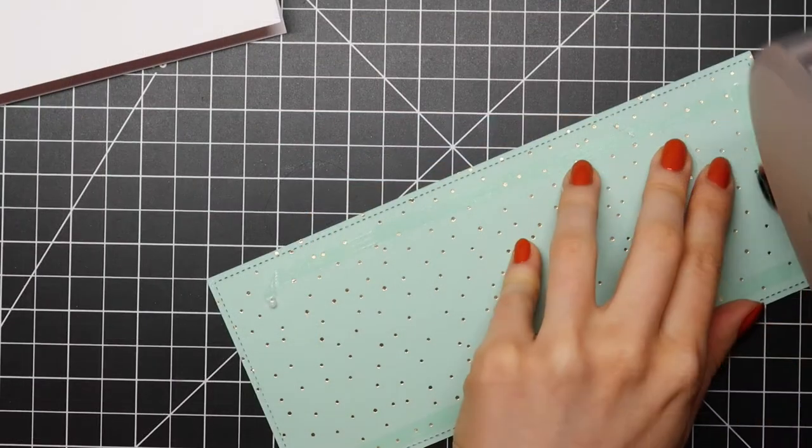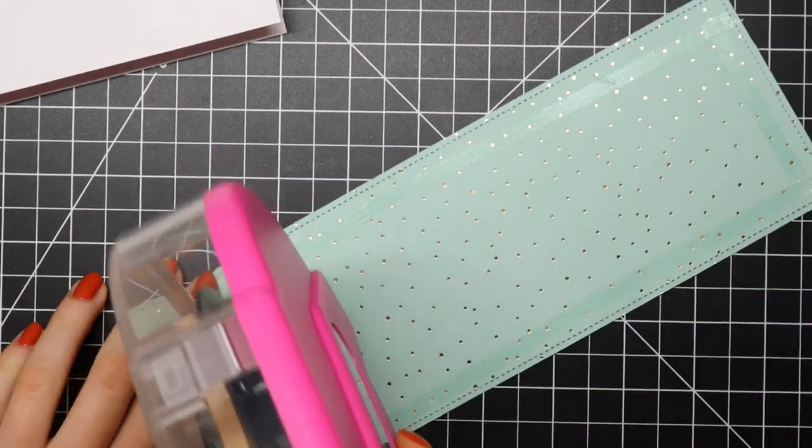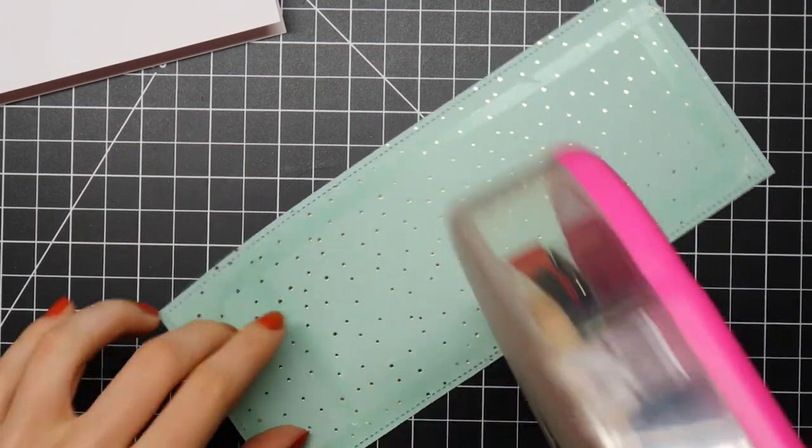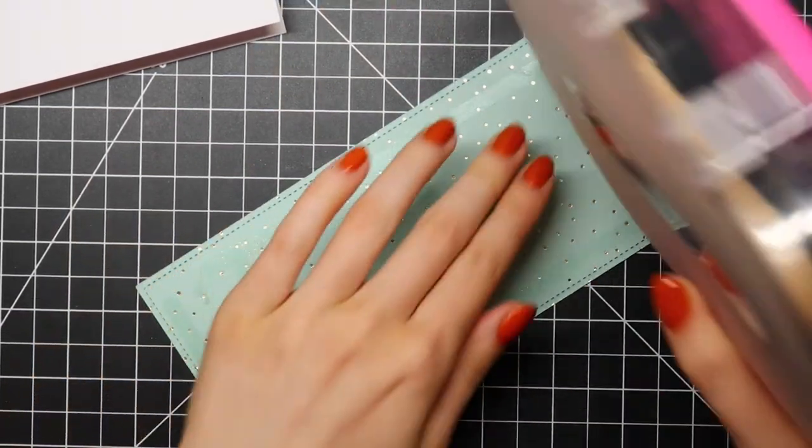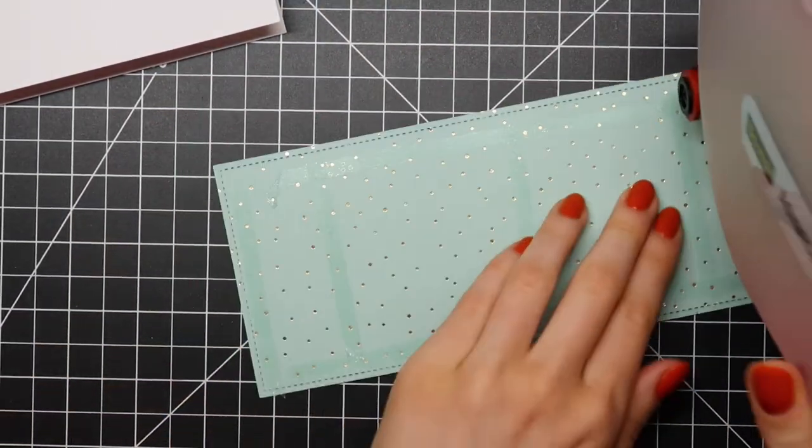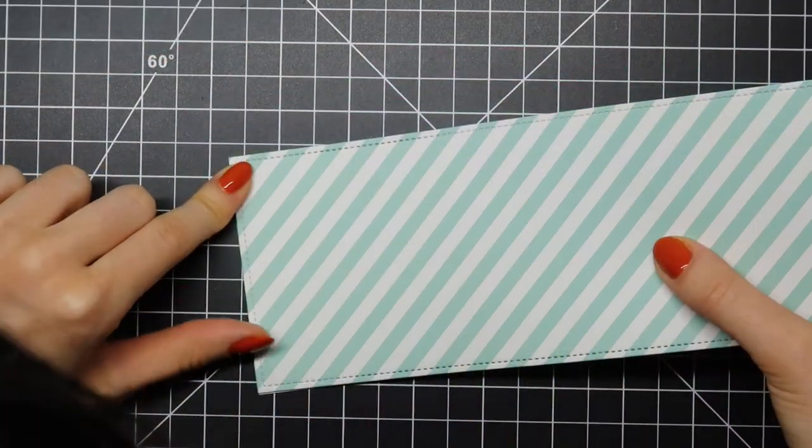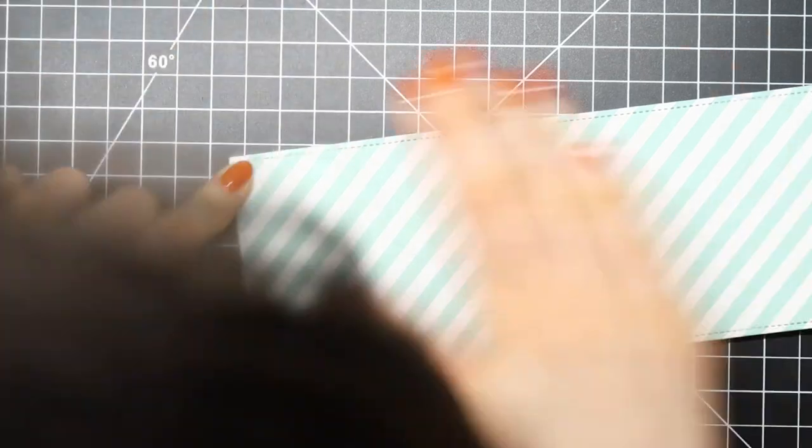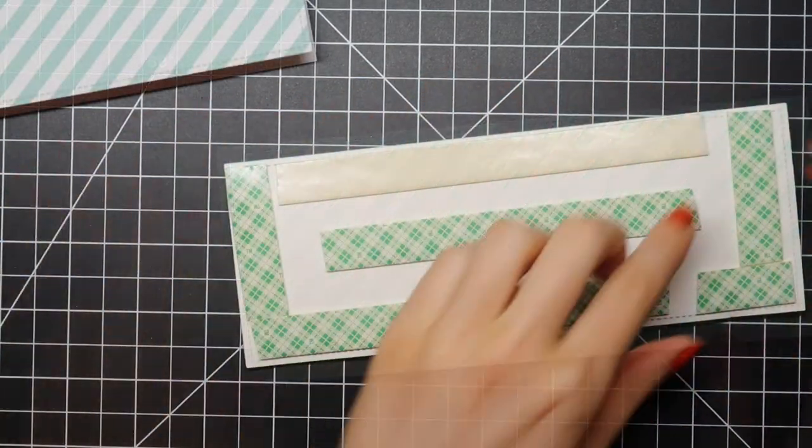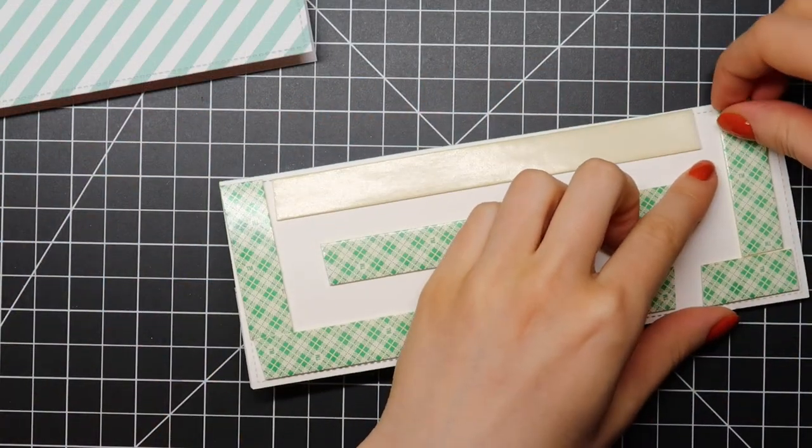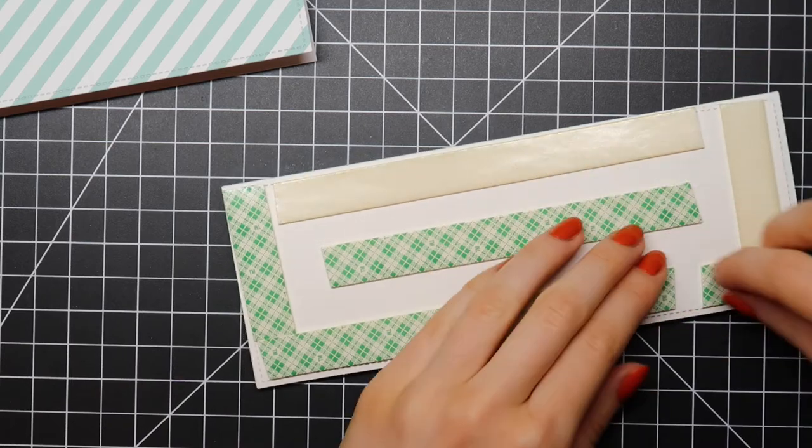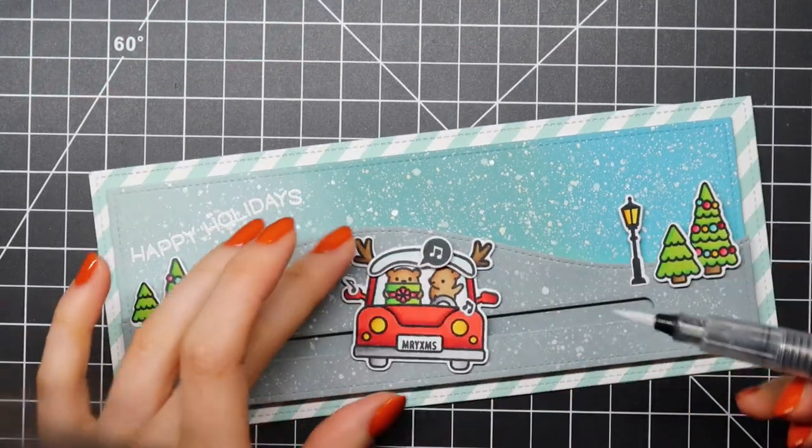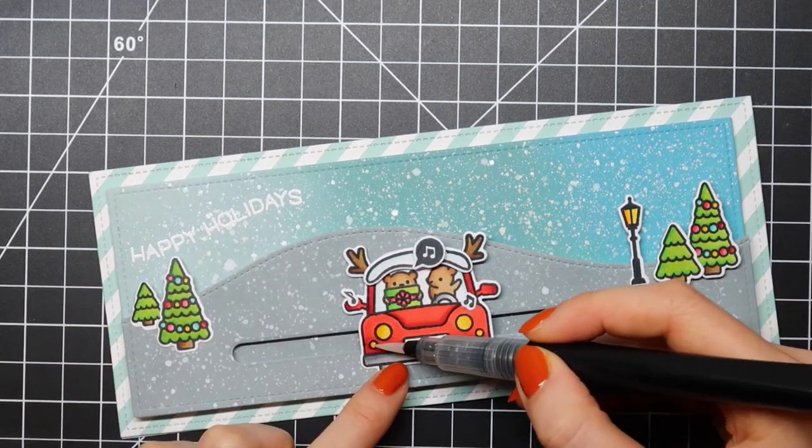I die cut another slimline using the Let It Shine Collection Pack from Lawn Fawn. I used the 12 by 12 pattern paper to die cut this slimline and then I'm going to adhere that to a notecard. I'm also adhering my finished ink blended slider piece using some more of that double-sided foam tape.